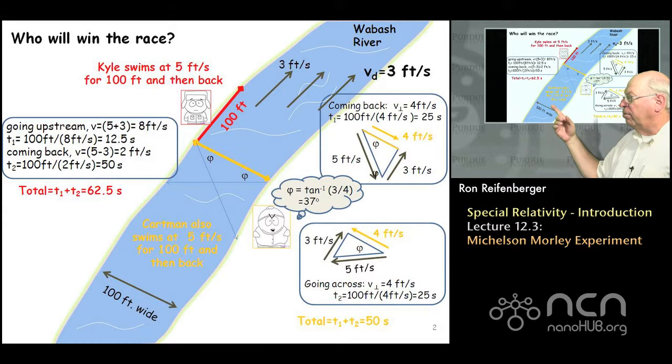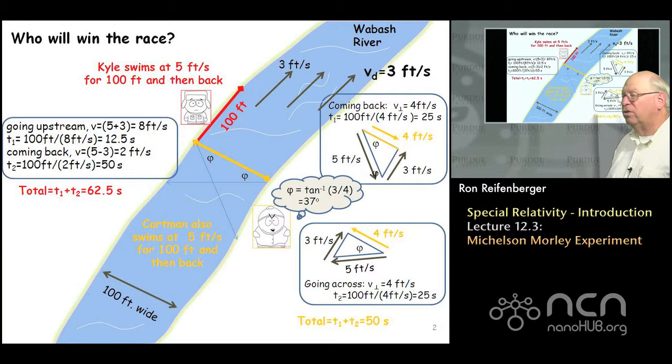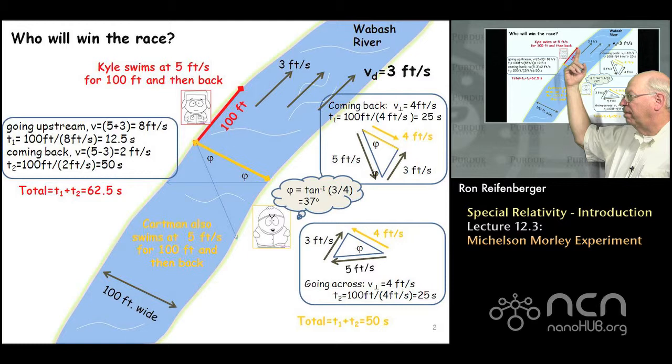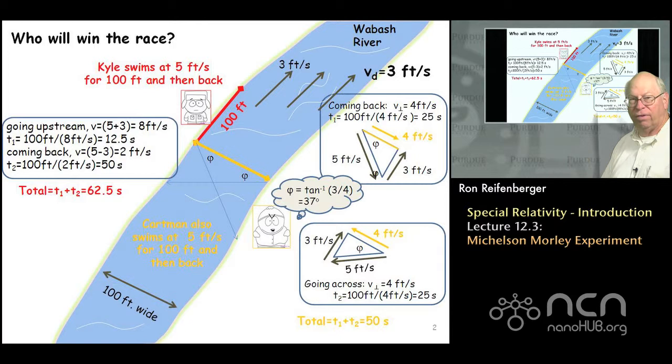The river that they're going to swim in has a drift velocity of about 3 feet per second. So the water is moving at 3 feet per second, and these two swimmers are going to swim 100 feet — we're going to time how long it takes them to go from their start point to 100 feet out and then back again. The red swimmer will swim upstream and back, and the yellow swimmer will swim across the river and back.